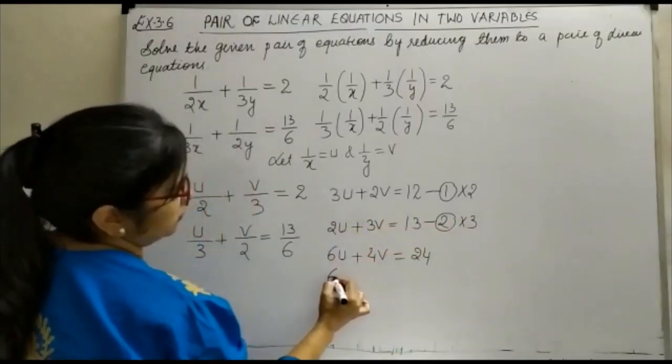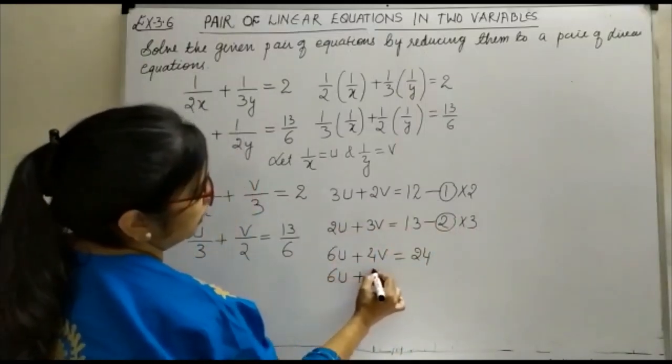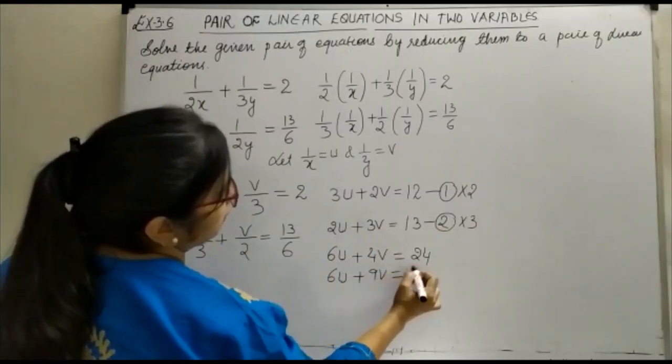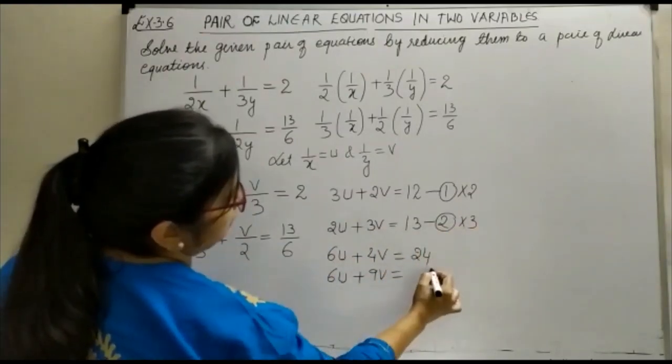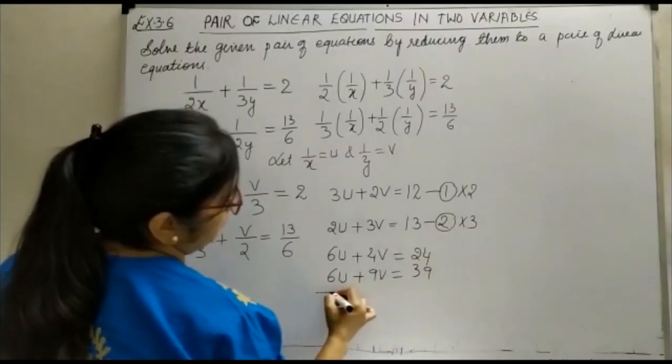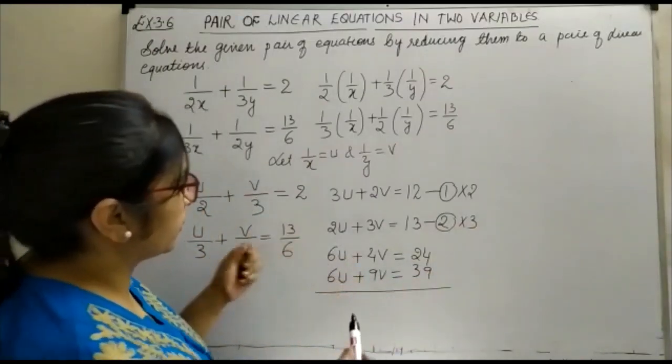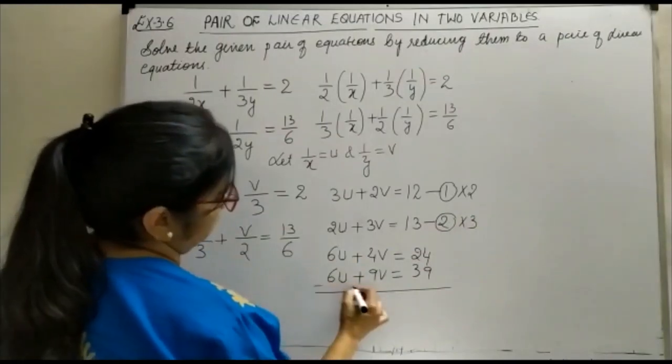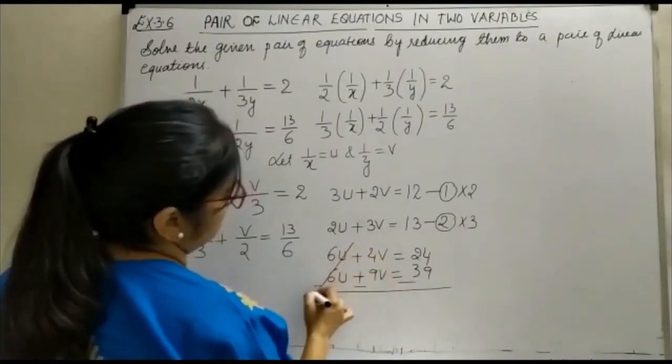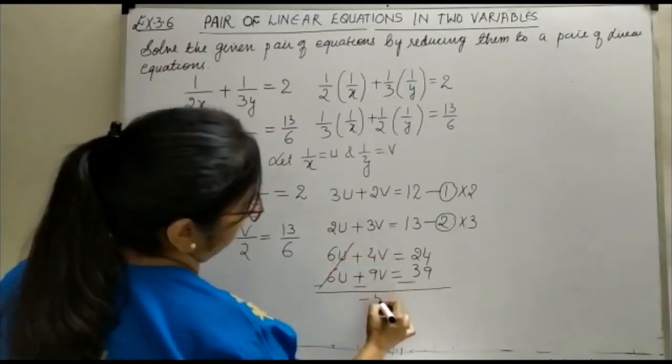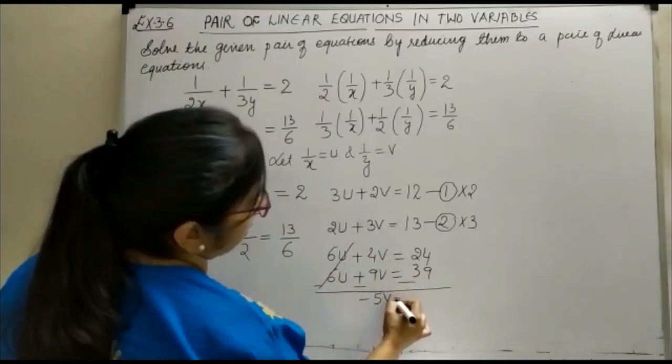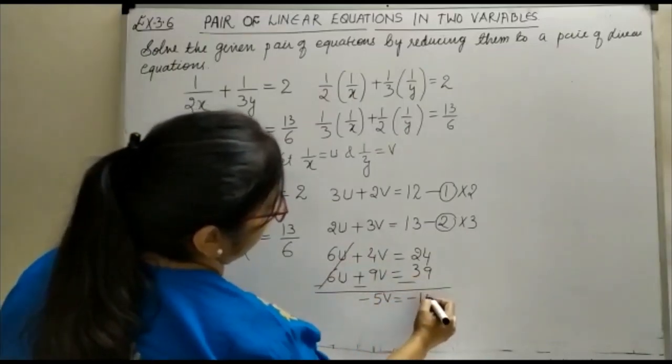Then 3, 2 is 6, 6u plus 9v is equal to, 3, 3 is 9 and 3, 1 is 3, so this is here 39. So you can see the coefficient of u are same, so just change the sign. When you change the sign, you see here, you get here minus 5v is equal to minus 15.